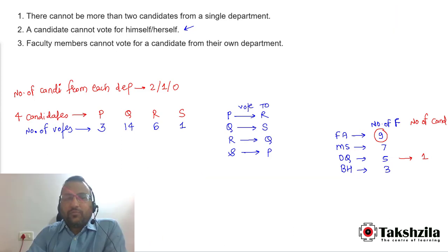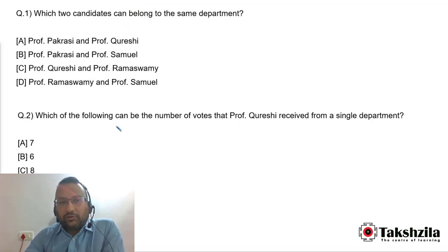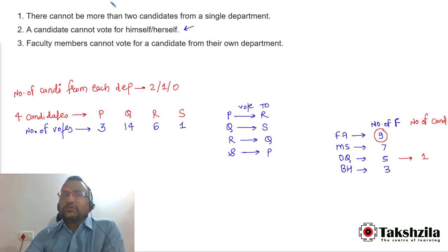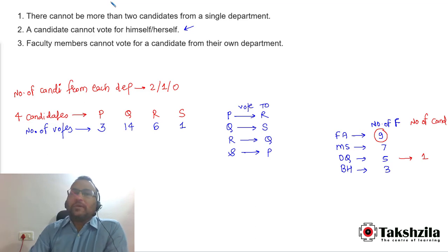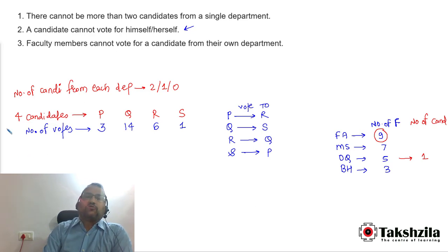Before we move ahead with calculation, let's look at the questions. The first question asks which two candidates belong to the same department. The second question asks which of the following can be the number of votes Professor Q received from a single department. So we need to identify which department each of P, Q, R, and S is from, and which departments contributed votes to each candidate.